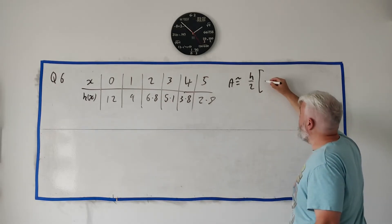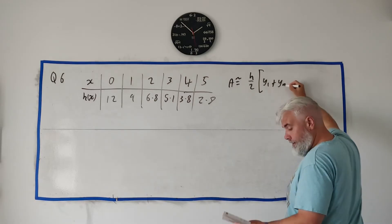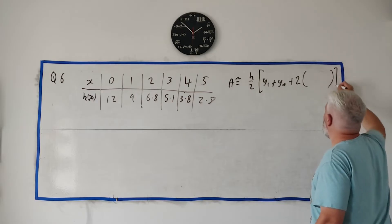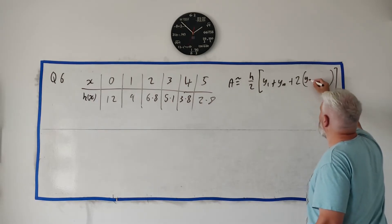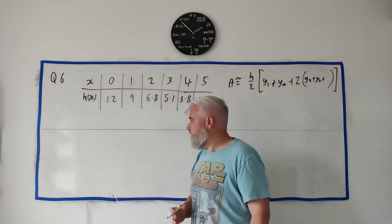From your book, I'll write it roughly here: the area is estimated by h divided by 2 multiplied by, and then it has y1 plus yn, plus two times all the others. So y2 plus y3 all the way up to yn minus 1, all the other numbers.